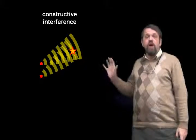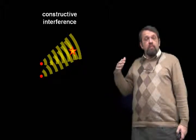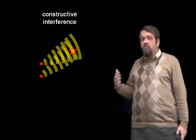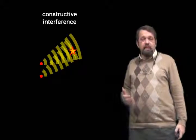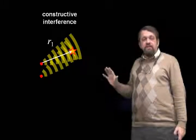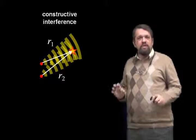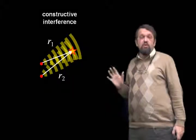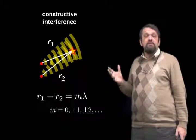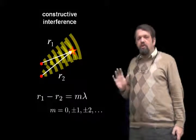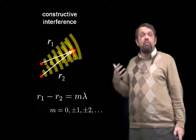Now let's consider one of those places where there's constructive interference between the two waves. That's a place where wave crests from the first source arrive at the same time as wave crests from the second source. There's a certain distance from the first source — R1 — and a certain distance from the second source — R2. Those distances might be the same. We're assuming the sources act in unison, in phase. It would also give constructive interference if the two distances differed by one wavelength, two wavelengths, and so on. So the condition for constructive interference is that the difference of those two distances is some integer — positive or negative — times the wavelength of the wave.